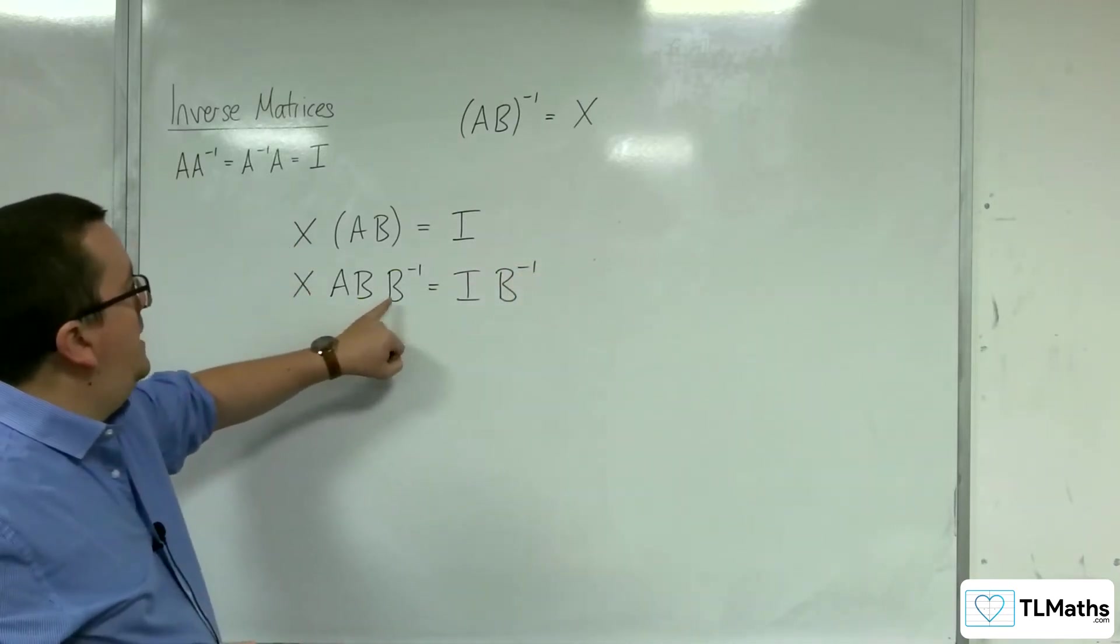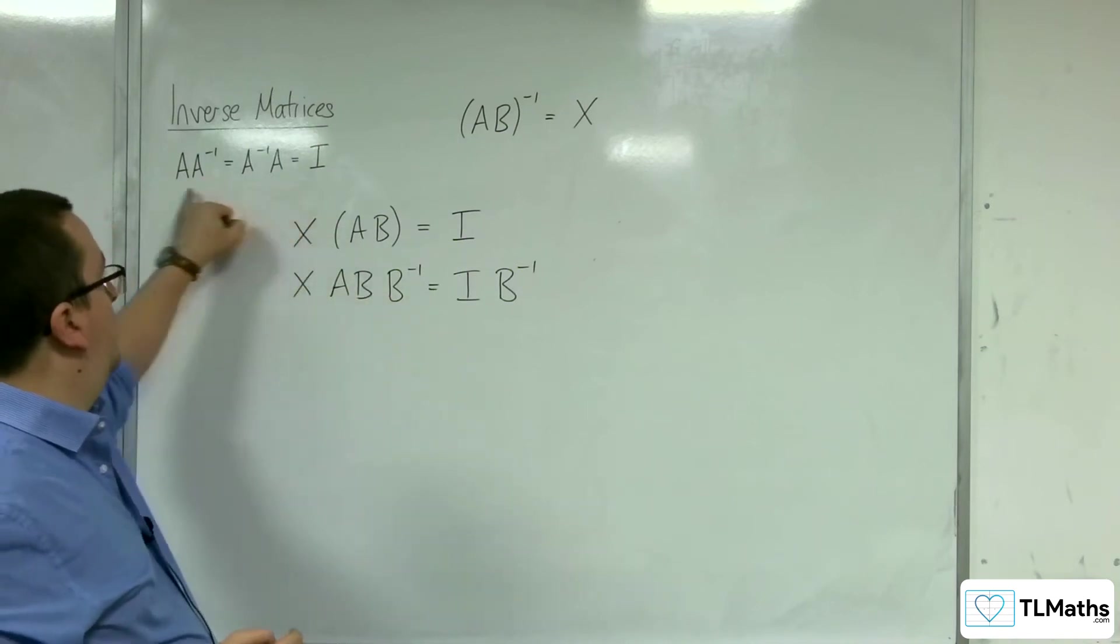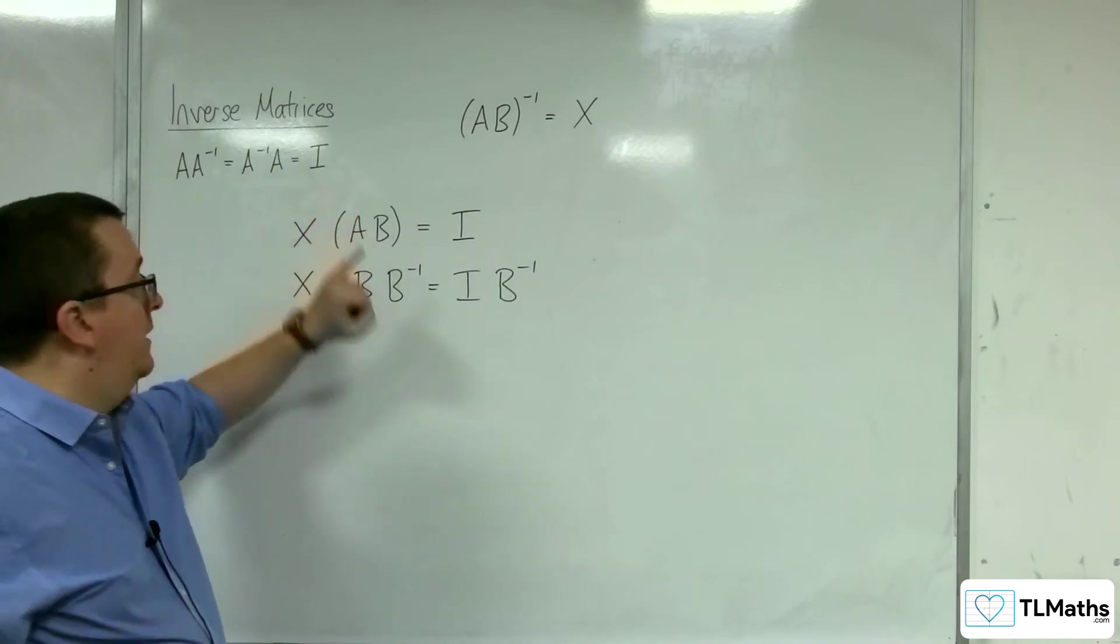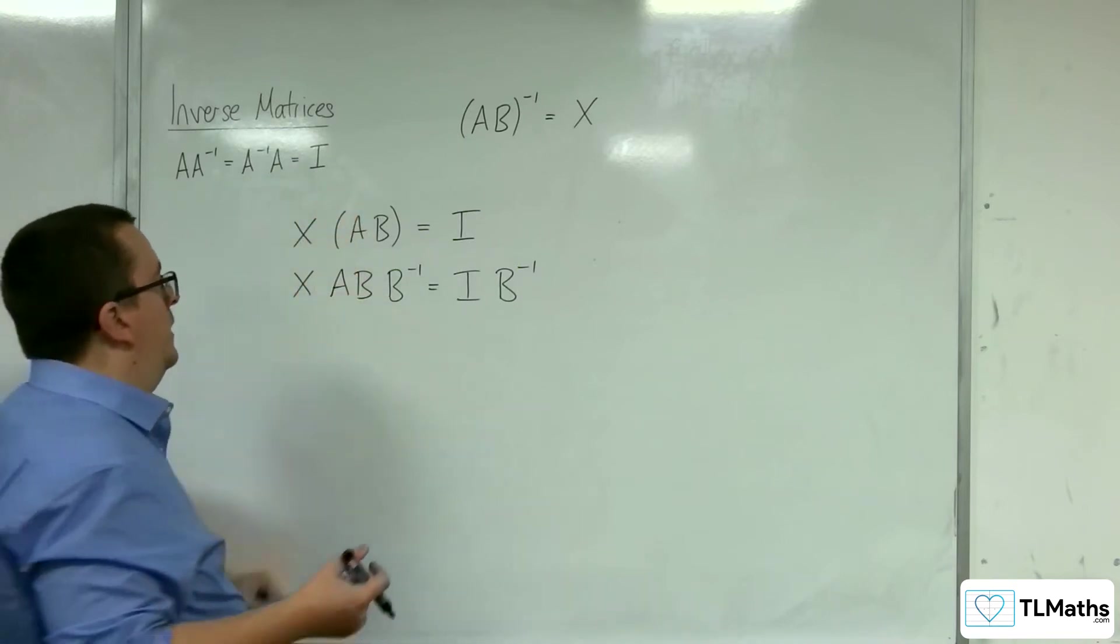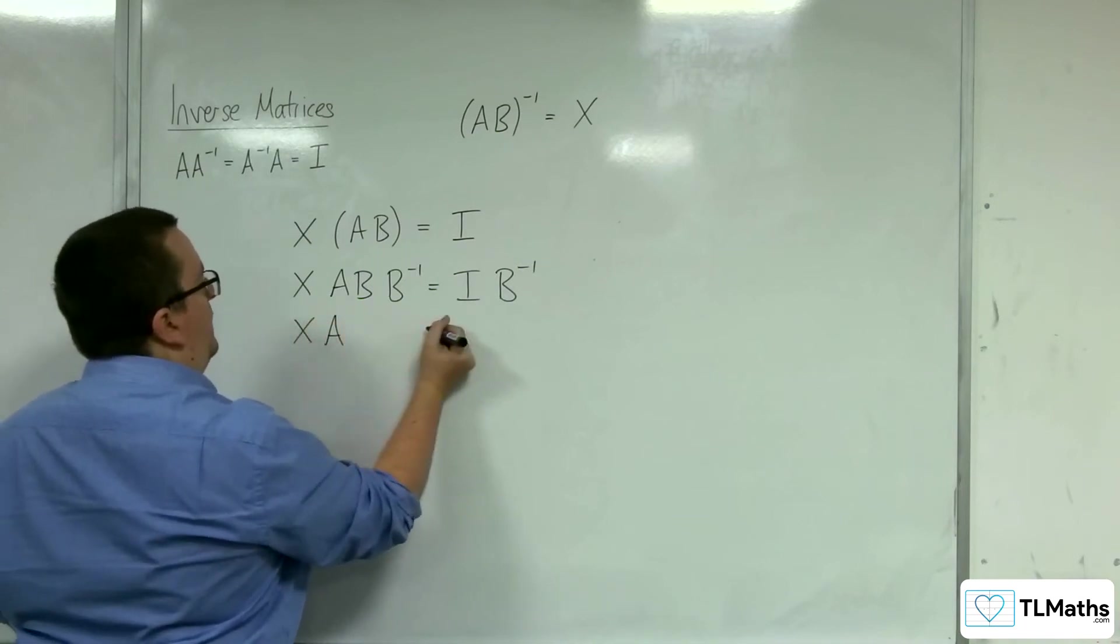Now we recognize that B, B^(-1) must, as we have seen from the previous video on uniqueness, must be the identity matrix. So I know that that's the identity matrix, so I just get left with XA.